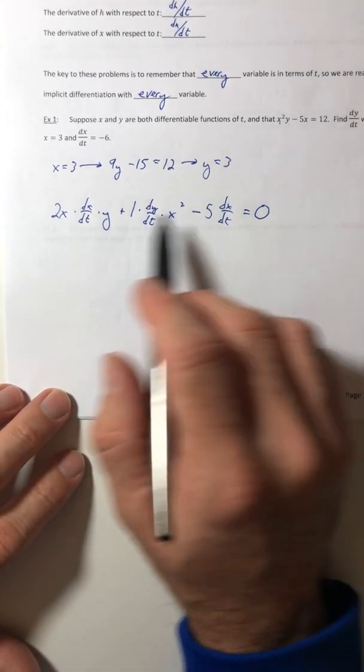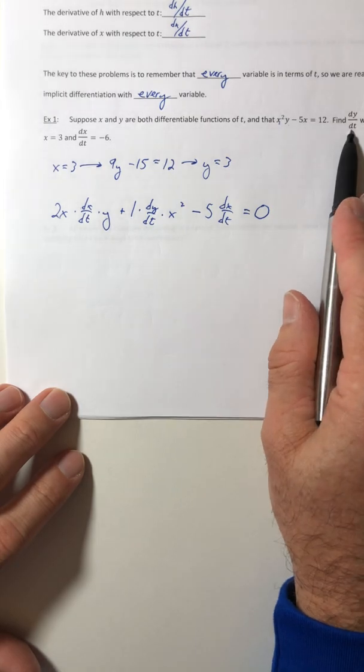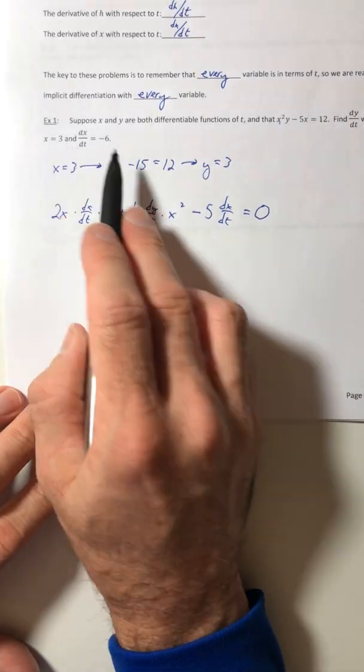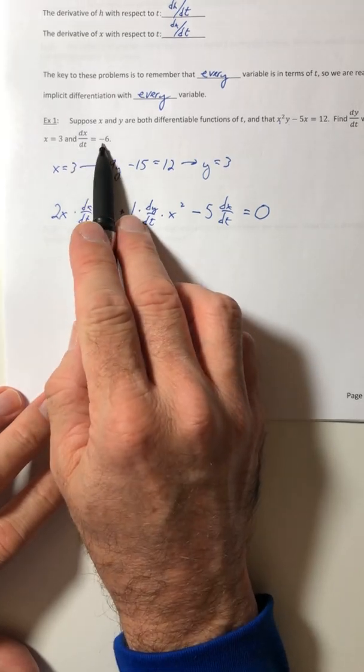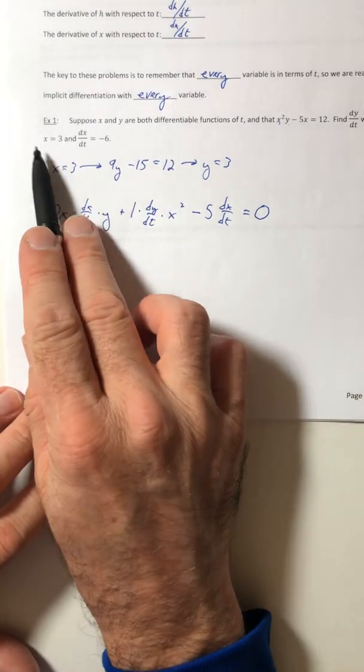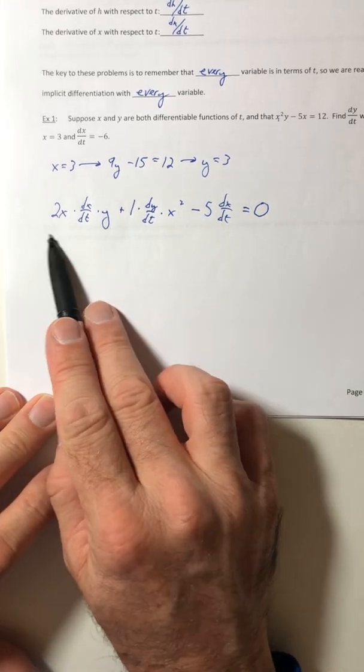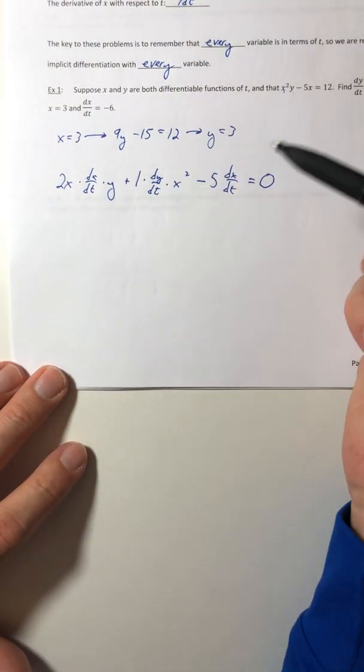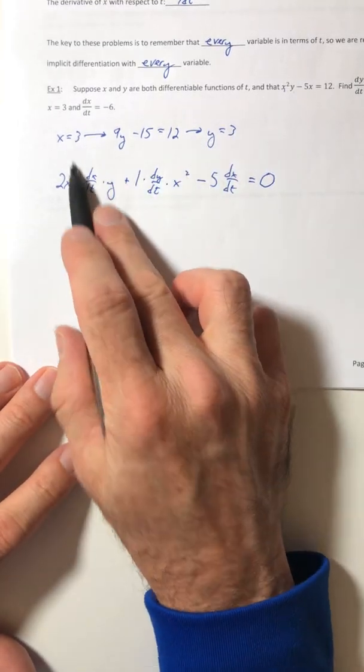There you go. So you've got to solve for dy/dt. Well, there it is. When x is equal to 3, the dx/dt is -6, and also the y is equal to 3. So we're going to start plugging in all of our numbers into here, so the only thing that should be left is that dy/dt, and then we can solve for it.